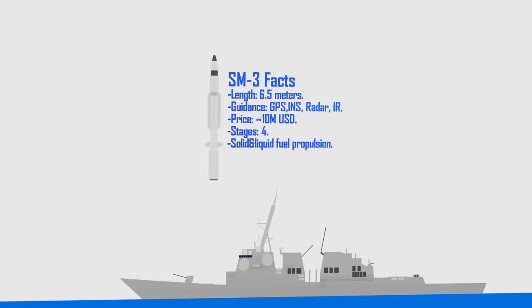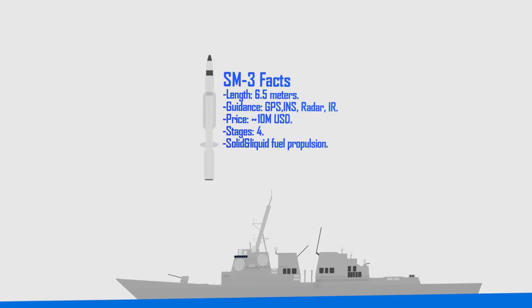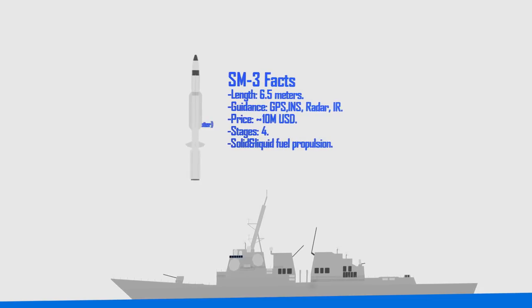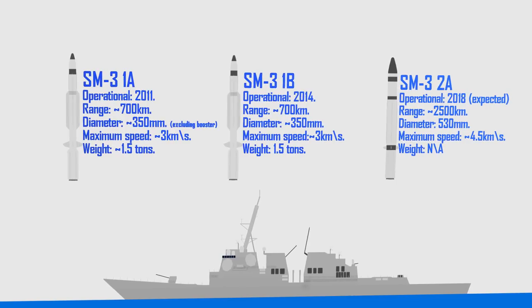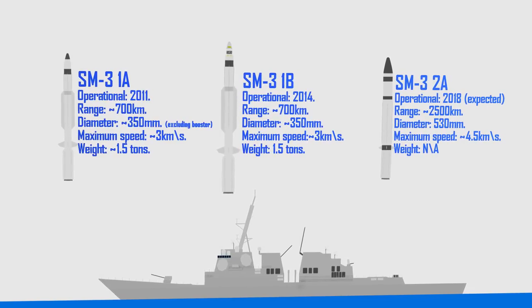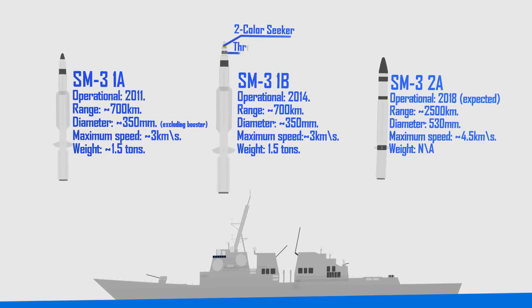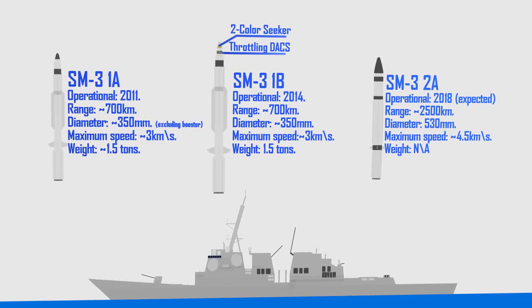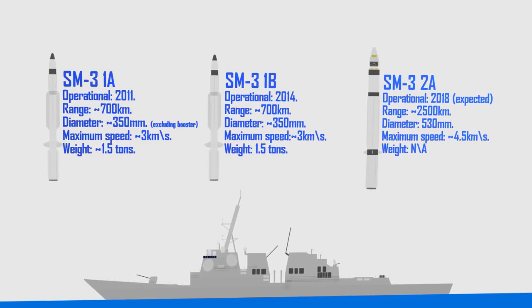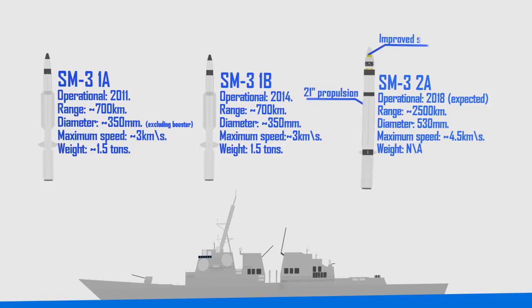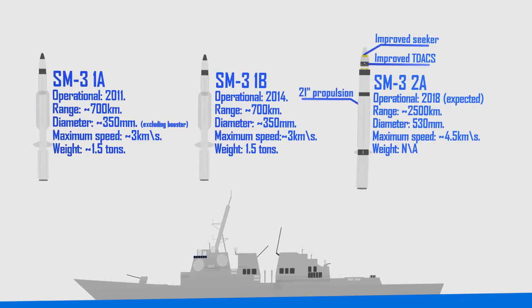SM-3, an exo-atmospheric, highly capable ballistic missile interceptor. It has the 1A, the 1B and the 2A variants. The 1B brought mainly an improved seeker and an improved divert and attitude control system, while the 2A increases the range, improves the seeker and divert and attitude control system.